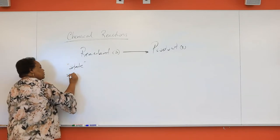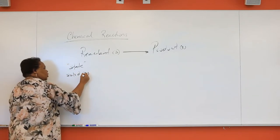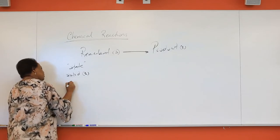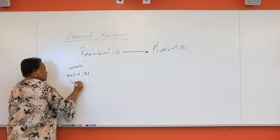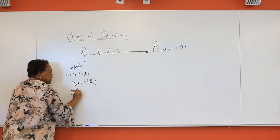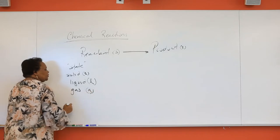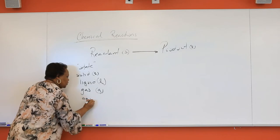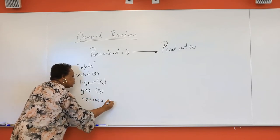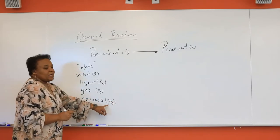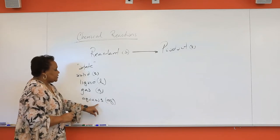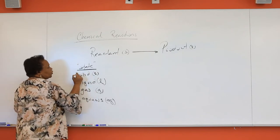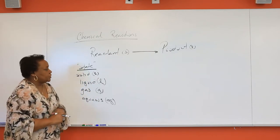If you have a solid, that chemical formula should be followed by an S. If it's a pure liquid, then an L. In this experiment, we're also going to be producing a gas, so it should be followed by the symbol G. In the laboratory, products are often aqueous solutions, meaning that substance is dissolved in water. Knowing the state of your reactants and products is going to be extremely important.